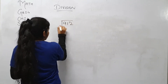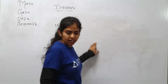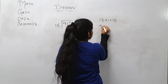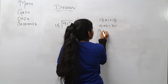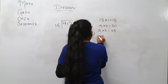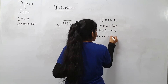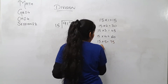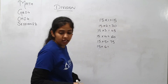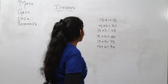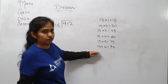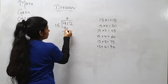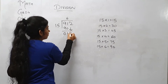Let's take another example: 912 divided by 15. So here we are going to write the table of 15. 15 ones are 15, 15 twos are 30, 15 threes are 45, 15 fours are 60, 15 fives are 75, 15 sixes are 90. So 91 is not going to come in the table of 15. So 15 sixes are 90. 91 minus 90: 1 minus 0 is 1, and carry 0. Now we will carry forward 2.